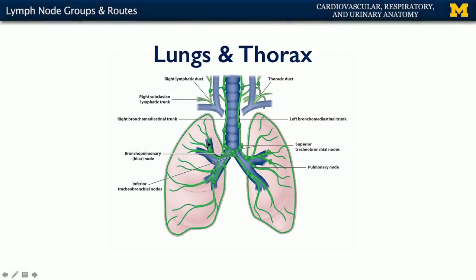We can see pulmonary nodes there. These pulmonary nodes are going to reflect the pulmonary vasculature. The pulmonary nodes push material into what are known as the hilar nodes, also known as the bronchopulmonary nodes, which are the nodes sitting at the hilum of each lung.